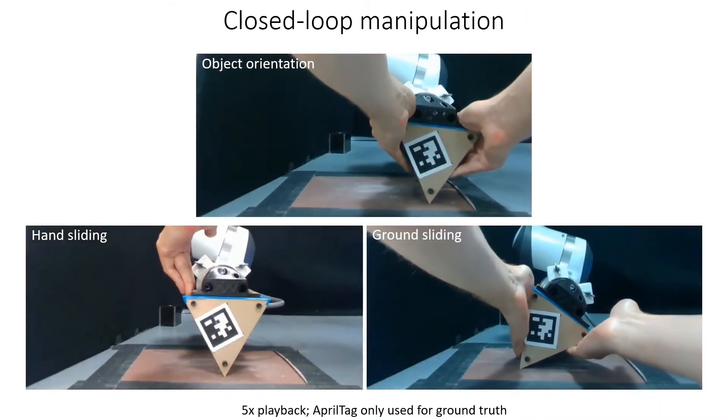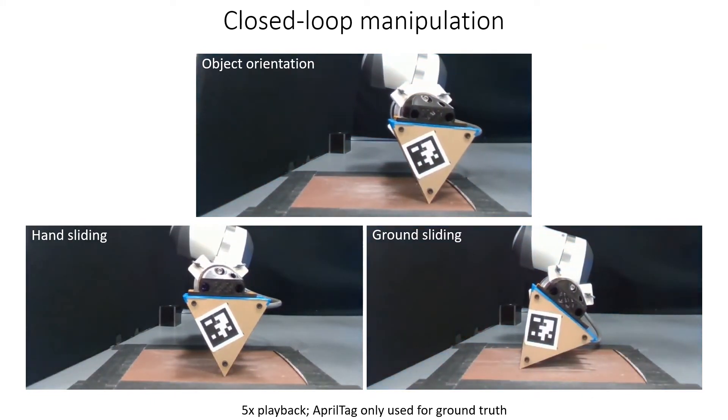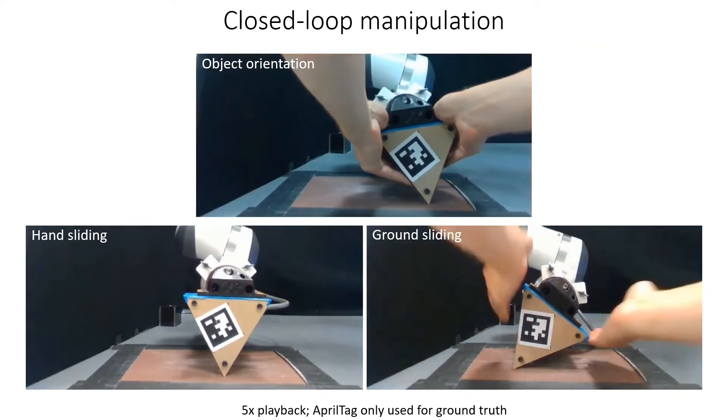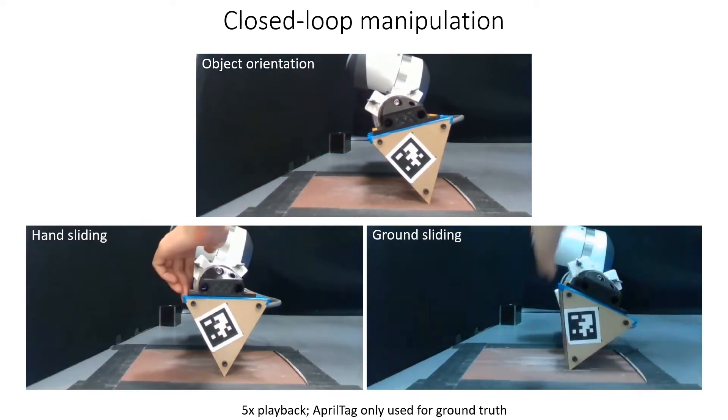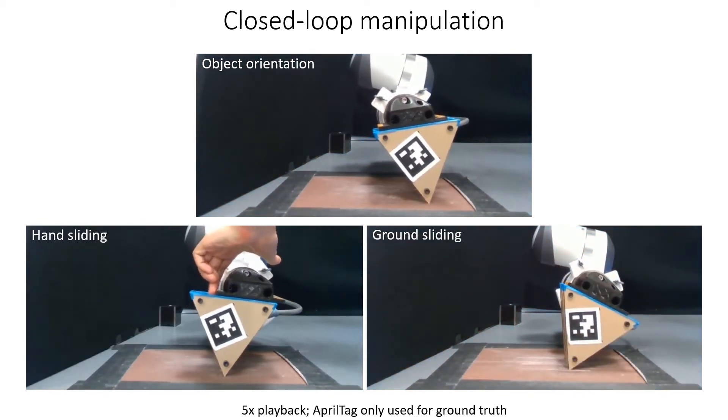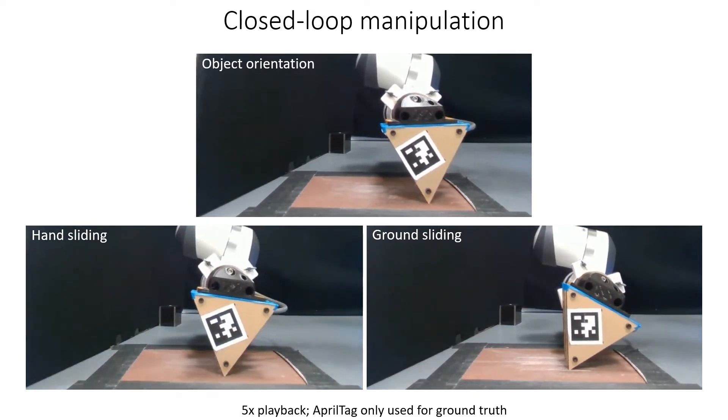Our framework is closed loop. The robot is able to regulate the contact configuration in response to perturbations in the object angle, shown on the top, the hand sliding position shown on the bottom left, and the object sliding position shown on the bottom right.